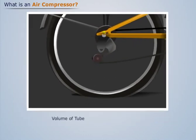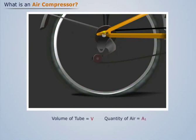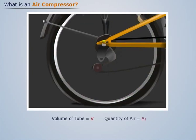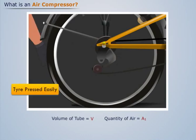At this time we know that the volume of his tube is V, and it contains some amount of air in it. Also we see that at this time it is very easy to press the tire.